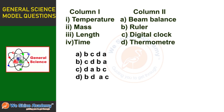The next question is: Match the following. 1: Temperature, 2: Mass, 3: Length, 4: Time — matched with instruments Bean balance, Ruler, Digital clock, Thermometer. The answer is: 1-D (Temperature — Thermometer), 2-A (Mass — Beam balance), 3-B (Length — Ruler), 4-C (Time — Digital clock).